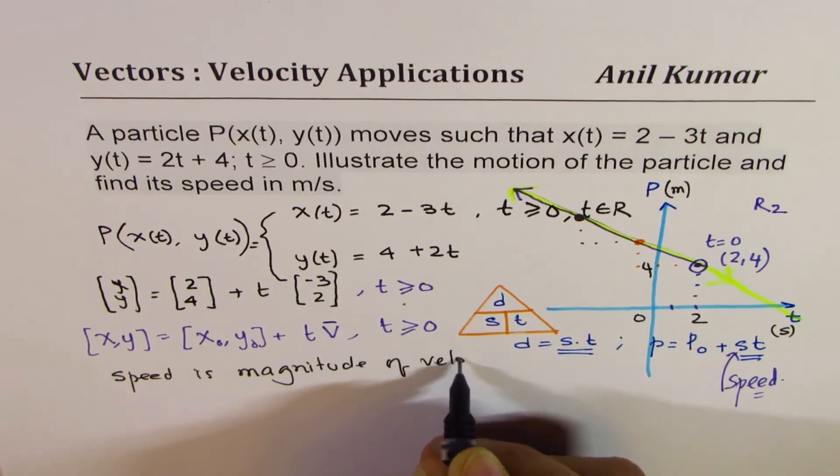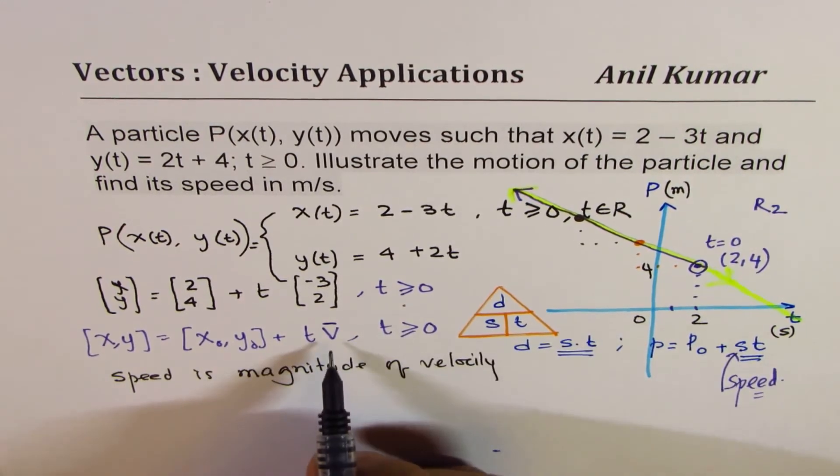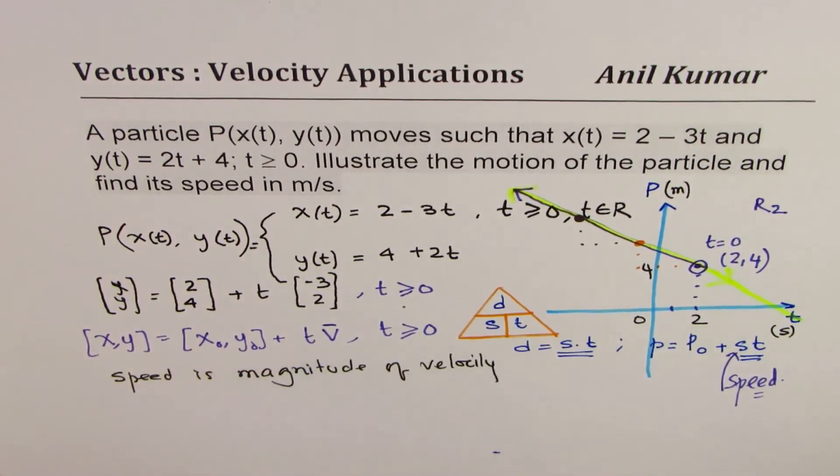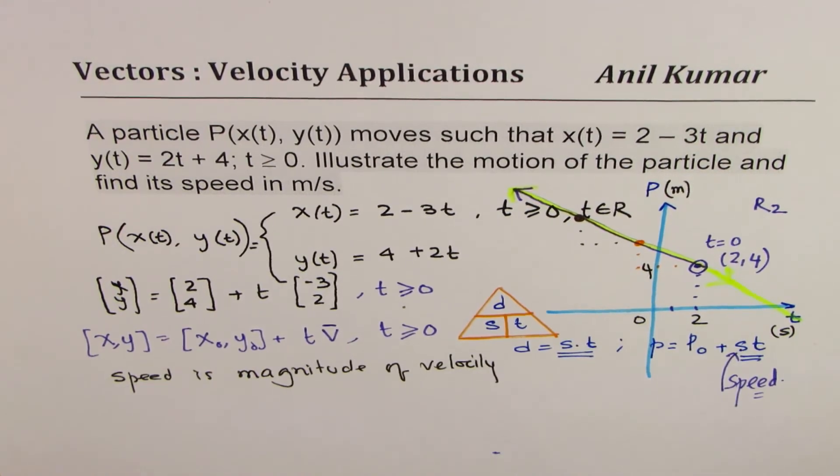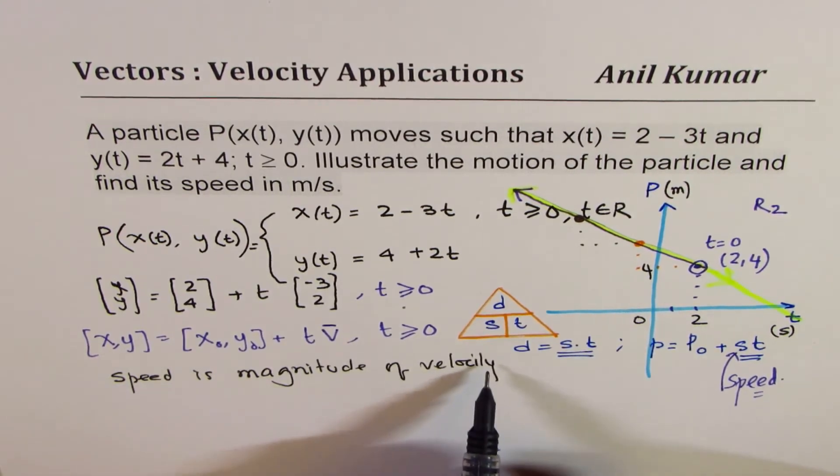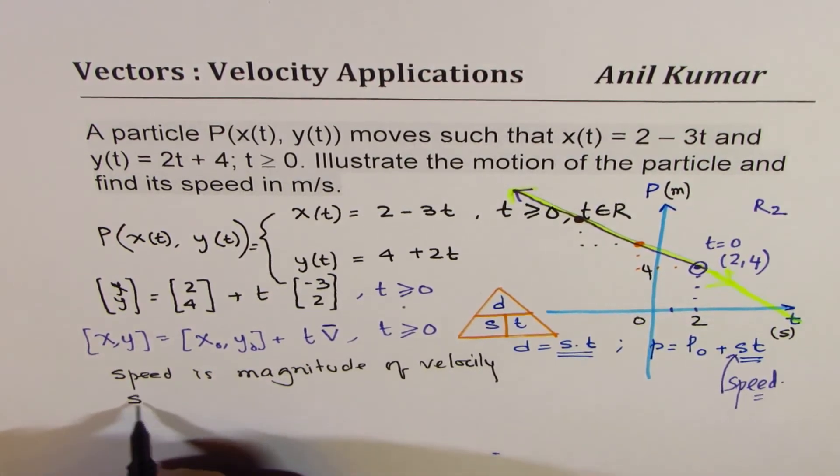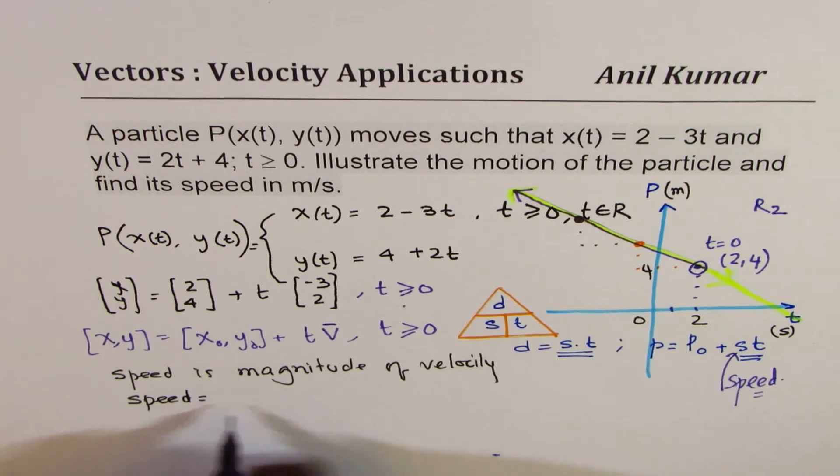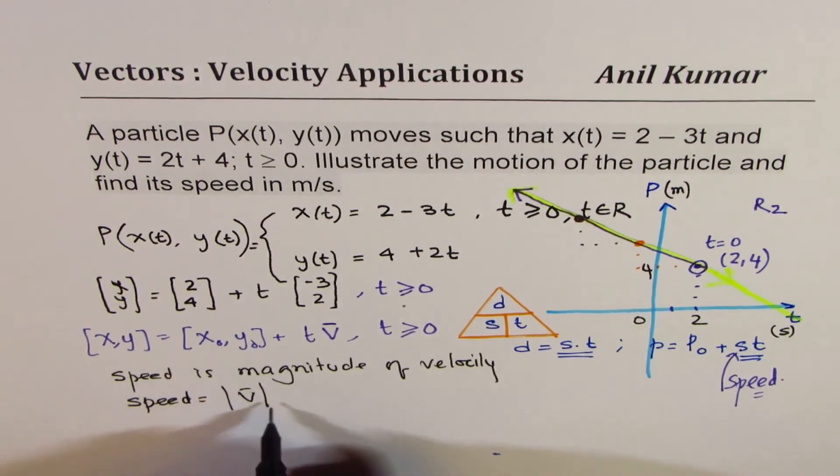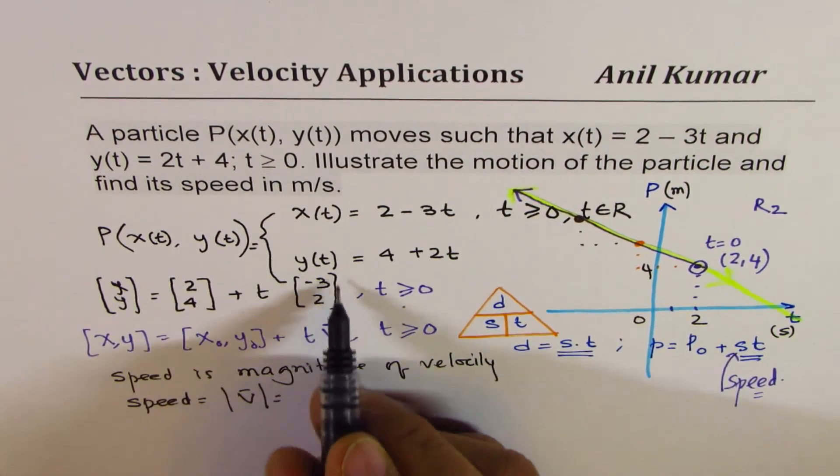What is speed? Speed is magnitude of velocity. Velocity is direction and magnitude. Do you understand? So speed is the magnitude of velocity.